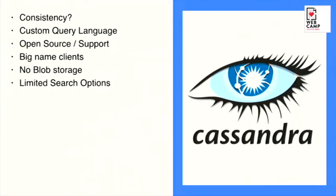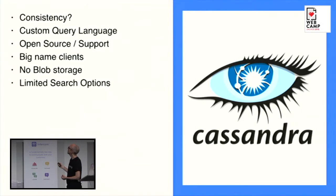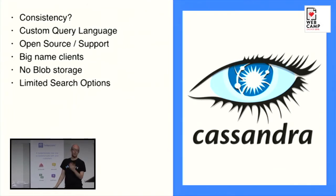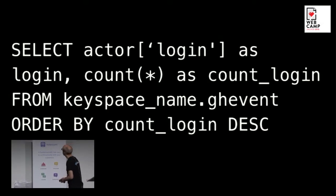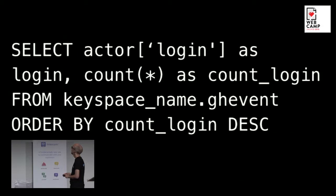Cassandra is the Apache project, so in terms of open source longevity it has a pretty reliable future. I put a question mark next to the consistency because I found it hard to get a complete and solid answer — which probably means you can make it whatever you need. It uses what's referred to as a custom query language, but it's actually very similar to SQL. The query is pretty similar. One difference is instead of a database it has a concept of a key space, and there is no GROUP BY — which for this query doesn't matter much, but if it was important to you, you'd need to look at other approaches.